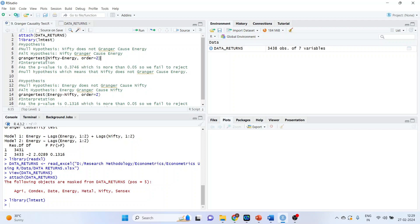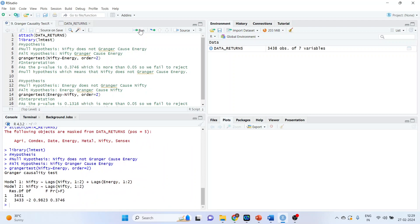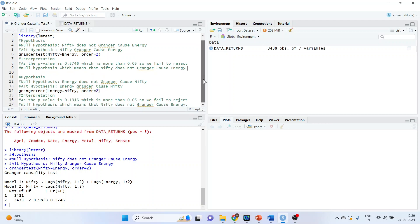So Granger test, round bracket, Nifty tilde energy, order 2, that is check for two lags. Run. And see the p-value. This is our p-value. So as the p-value is 0.3746, which is more than 0.05. So we fail to reject null hypothesis, which means that Nifty does not Granger cause energy.